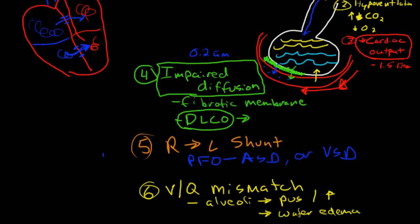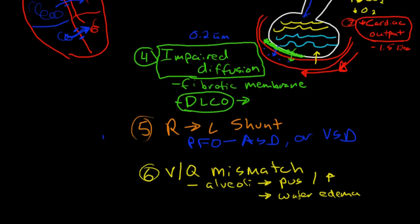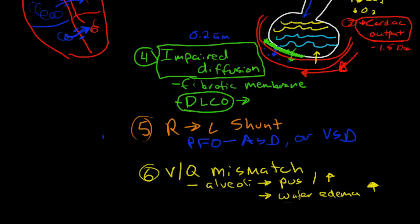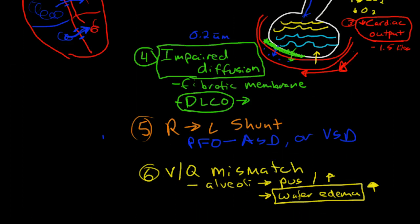And there's no vasodilation here. However, because of increased venous pressure, it's going to stent the veins open and it's going to cause perfusion of edematous alveoli. So this is called a VQ mismatch.